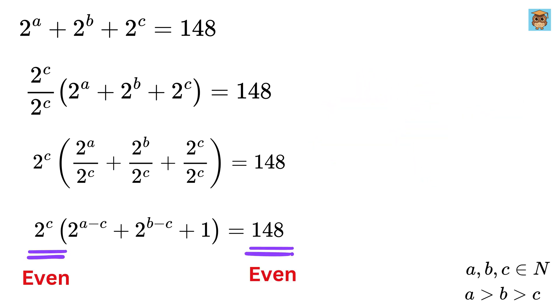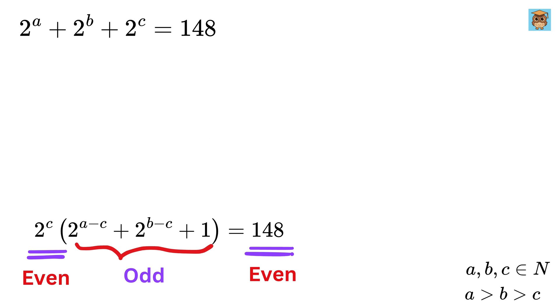Now, if you look here, both of them are even, but this is odd, so this overall thing is odd. Hence, we will rewrite 148 as a product of an even and an odd number.